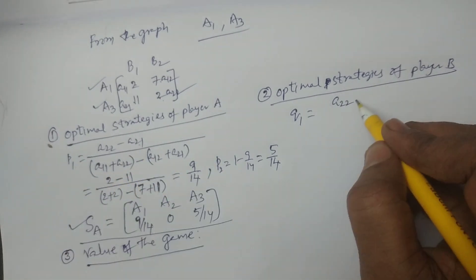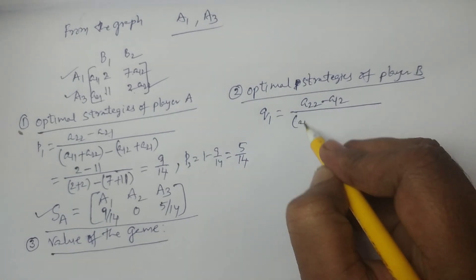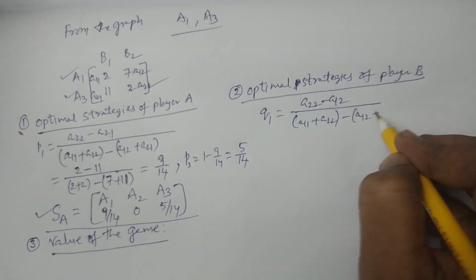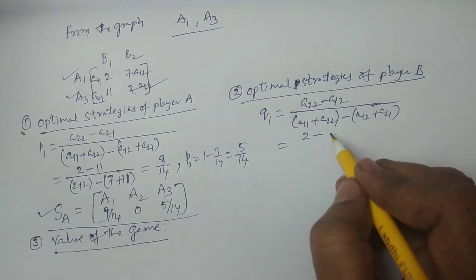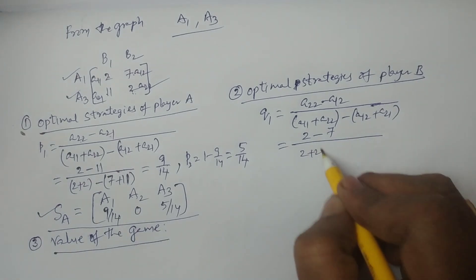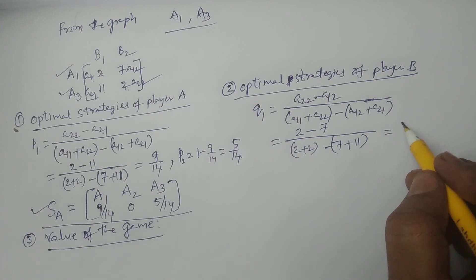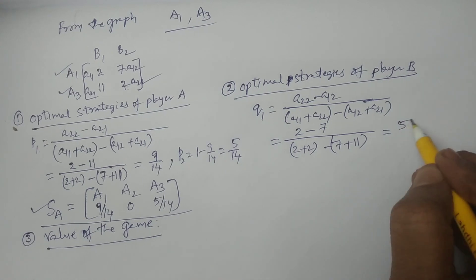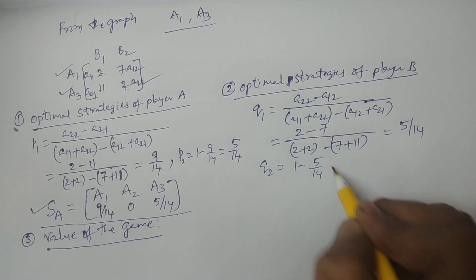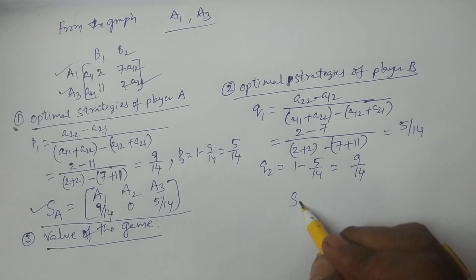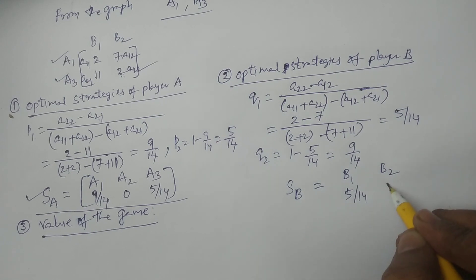For player B, q1 = (a22 minus a12) divided by (a11 plus a22 minus a12 minus a21). So q1 = (2 minus 7) divided by (2 plus 2 minus 7 minus 11) = minus 5 divided by minus 14 = 5/14. Then q2 = 1 minus 5/14 = 9/14. The optimal strategy for player B is: SB = (B1, B2) with probabilities (5/14, 9/14).